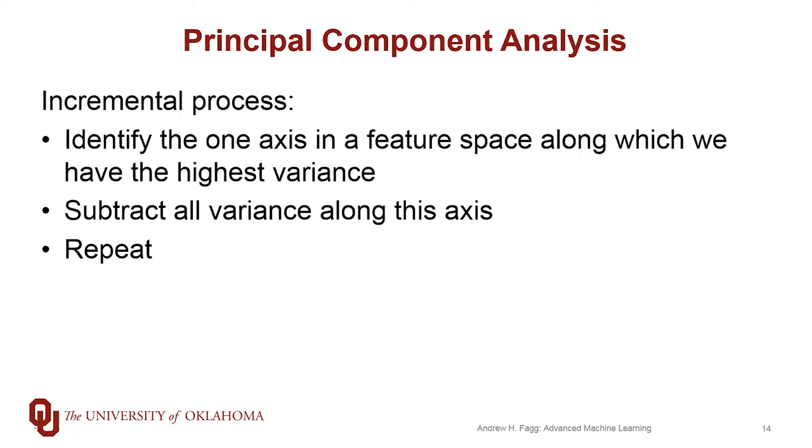We first identify the one axis along which we see the largest variance within this feature space. Now, this axis doesn't have to be parallel to one of the feature dimensions. It can actually be along multiple feature dimensions.